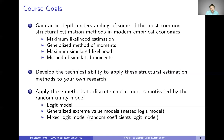Finally, we are going to apply these methods to discrete choice models motivated by the random utility model — talking about things like the logit model, nested logit or GEV models, and the mixed logit or random coefficients logit model, just to provide a constant framework in which we're going to estimate things. These methods apply more broadly than just discrete choice models, but we're going to focus on discrete choice models specifically in this course.